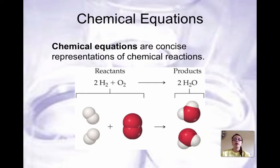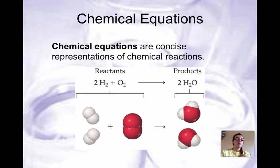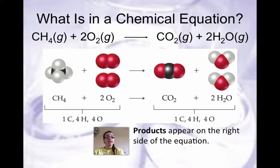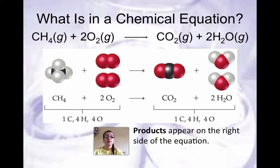It's important to balance your chemical equation because this gives us our mole ratio that we're going to use in the next lecture when we talk about stoichiometry. So what is in a chemical equation? We have the reactants on the left side and the products on the right side. Those should be different if it's a chemical reaction, because in order for a chemical change to happen, we have to form something new.